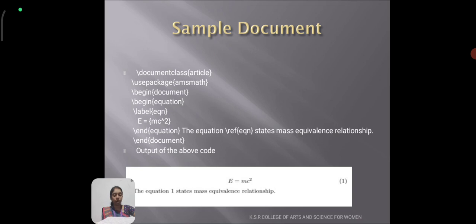In order to get numbered expressions, we use \begin{equation array} and \end{equation array}. A complete set of unnumbered equations is obtained with \begin{equation array*} and \end{equation array*}. The output becomes E = mc^2 equation number 1, then equation 1 states mass equivalence relationship.